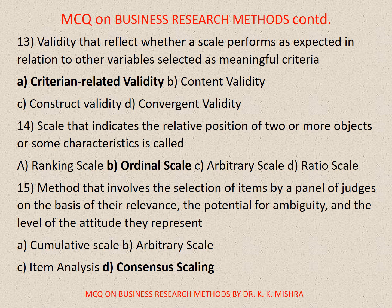Question number fourteen. Scale that indicates the relative position of two or more objects or some characteristics is called. Options are: A. Ranking scale, B. Ordinal scale, C. Arbitrary scale, D. Ratio scale. Correct option is B. Ordinal scale.